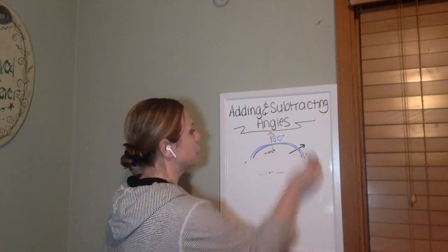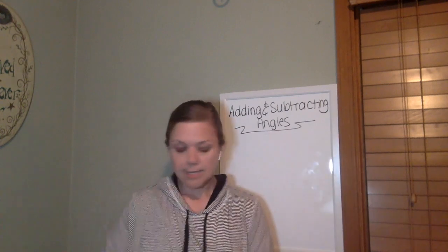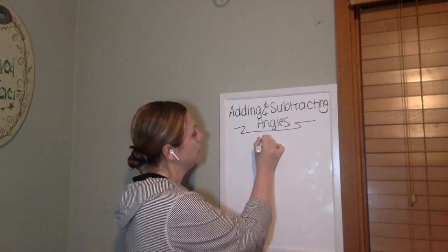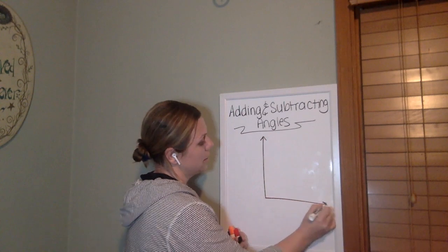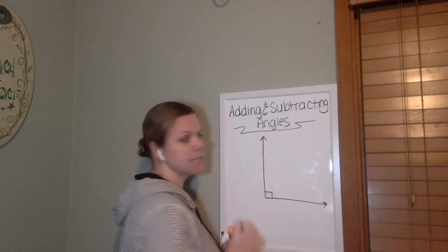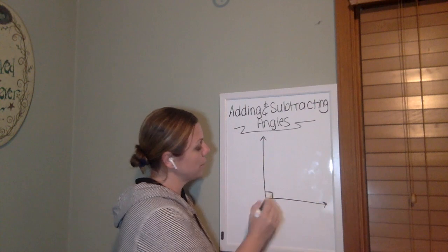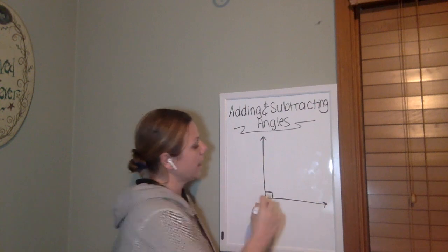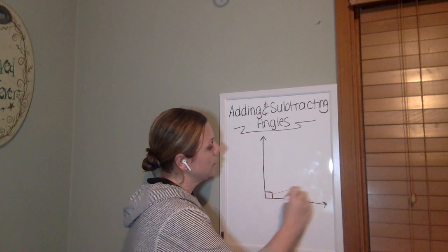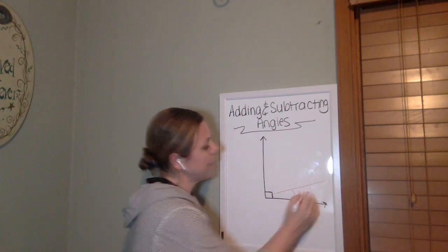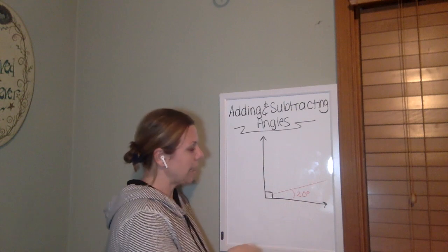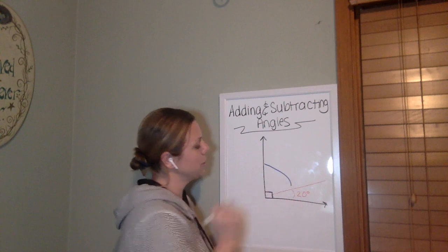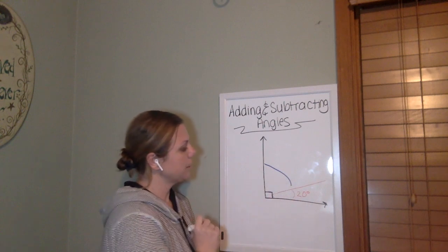So we're going to do another one sort of similar to that. This time I'm going to give you your right angle. So here's my 90 degree angle. Remember this little square here represents a right angle or 90 degrees. And I'm going to tell you that this is a 20 degree angle, and I'm going to ask you to figure out this unknown part over here. So just think about that for a second.